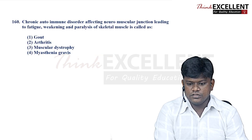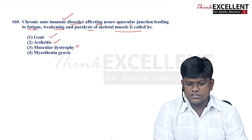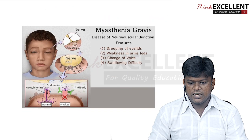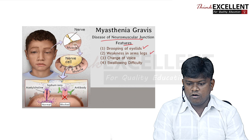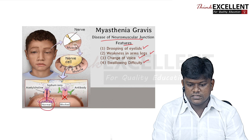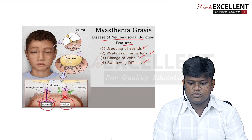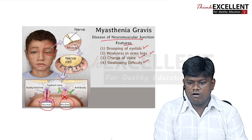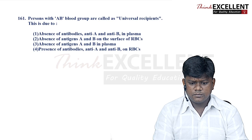Question 160: chronic autoimmune disorder affecting the neuromuscular junction, leading to fatigue, weakening, and paralysis of skeletal muscles. Options are gout, arthritis, muscular dystrophy, and myasthenia gravis. Myasthenia gravis is a disease of the neuromuscular junction with symptoms like drooping eyelids, weakness of limbs, change of voice, and difficulty swallowing — caused by antibodies blocking acetylcholine receptors. Option 4 — myasthenia gravis — is the right answer.